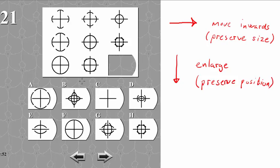So let's rule out some. Obviously it's not going to be this one, this one, this one, this one, or this one. We can notice that this one is the same as this one, so we can rule this one out as well.